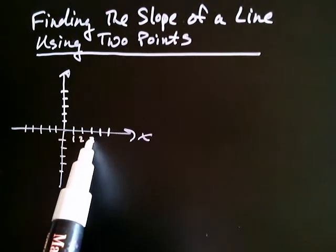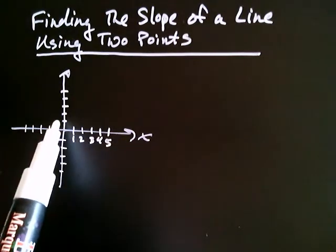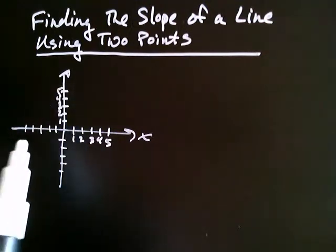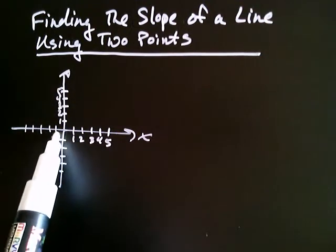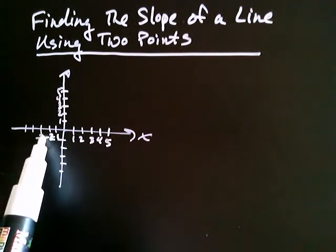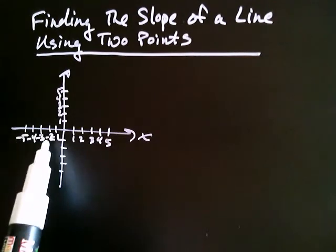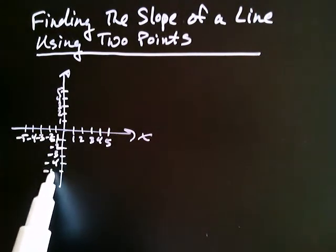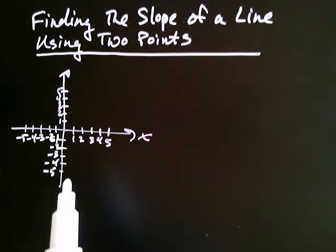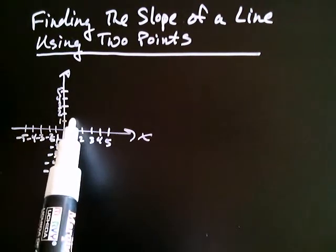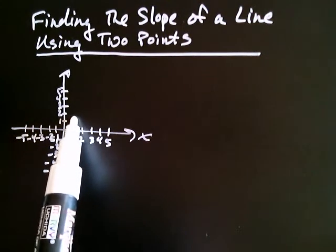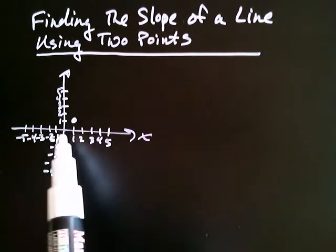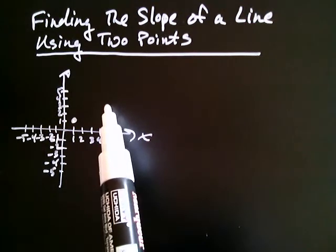Let's go ahead and label these. Negative one, negative two, negative three, negative four, negative five. So let's say you had two points. Let's say you first had the point one, one. And you had a second point, let's say five, three. So five, three is way over here.